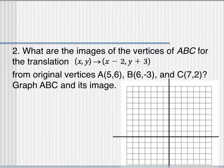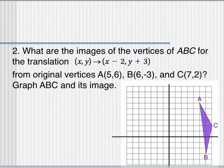What are the images, or the results, the new versions, of the vertices of ABC following this translation rule where every point x comma y becomes x minus 2y plus 3 for the original vertices ABC here. So first off, graph triangle ABC. It should look kind of like that. Now there's two different ways to figure out where the image or the resulting shape is after this translation.